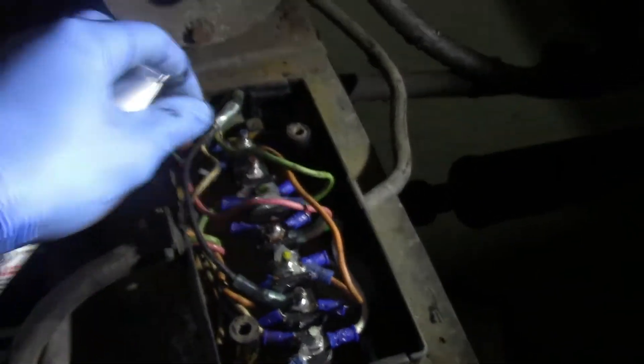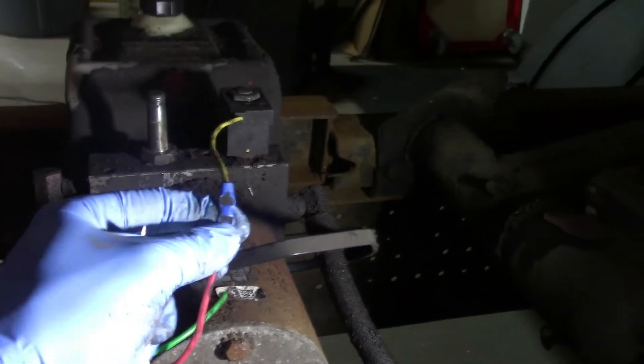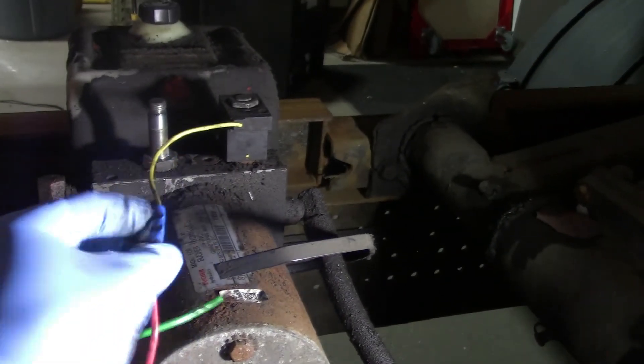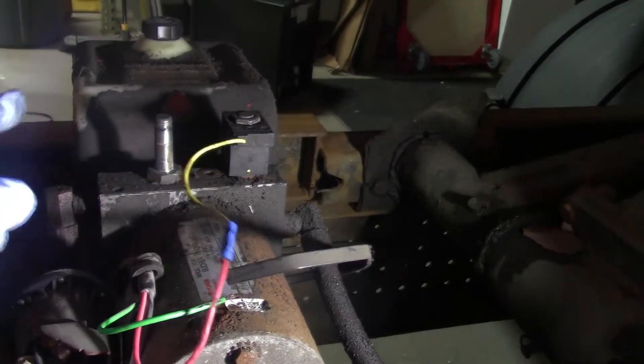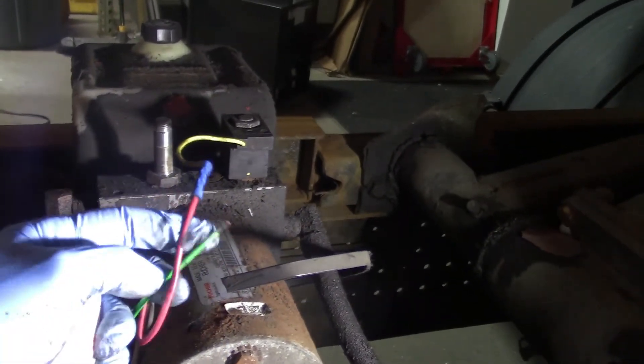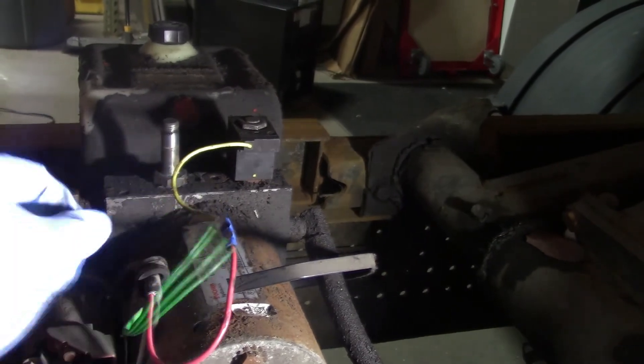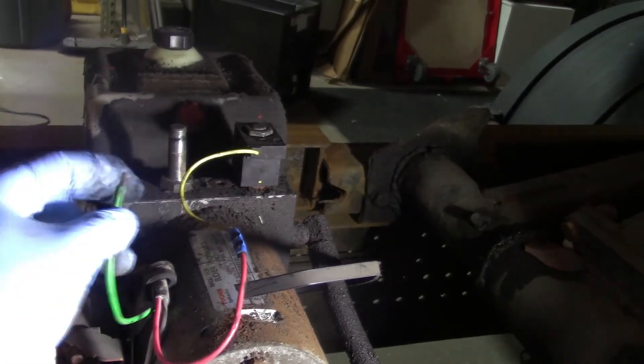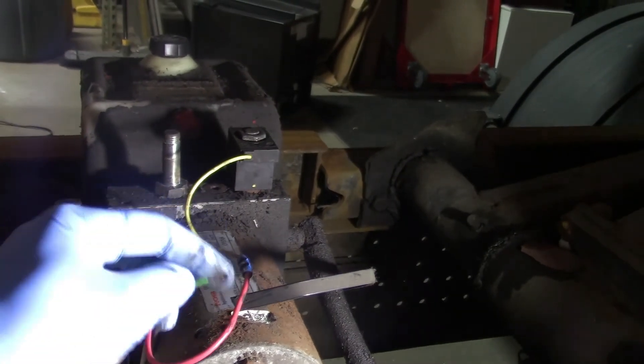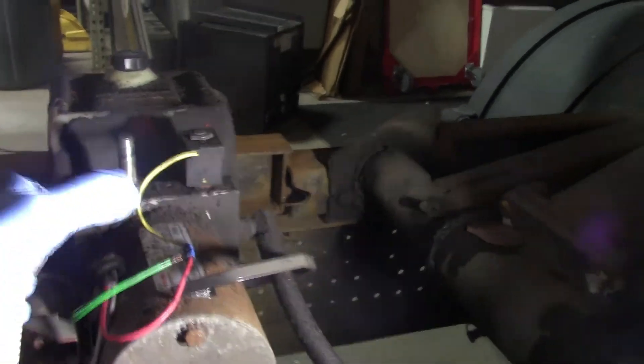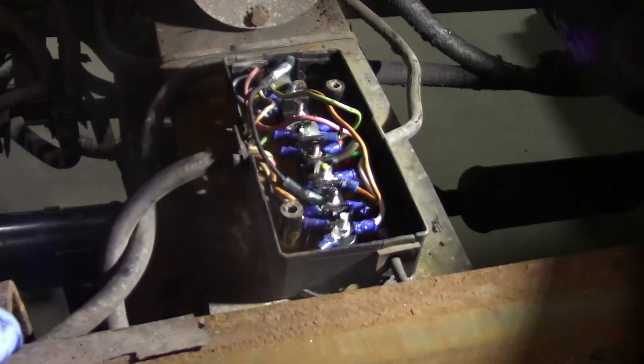They use nice heat shrink butt splice connectors here. Unfortunately they didn't here - that's just a standard butt splice and you shouldn't use that in an outdoor environment, so that's going to get replaced. And of course I had to cut the green wire here for that other coil that was bad, so that's going to get replaced with a weather-rated marine epoxy sealing butt splice connector.